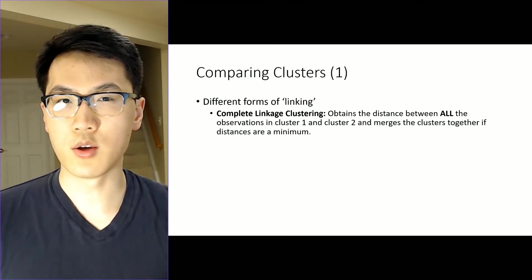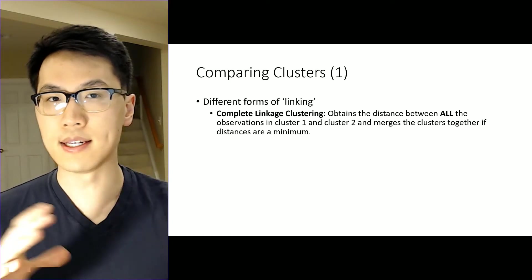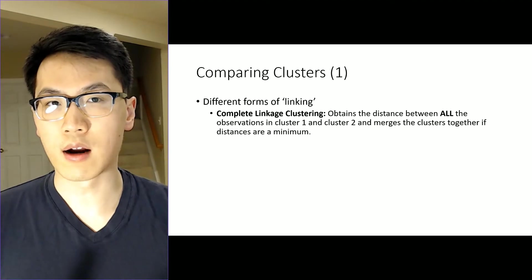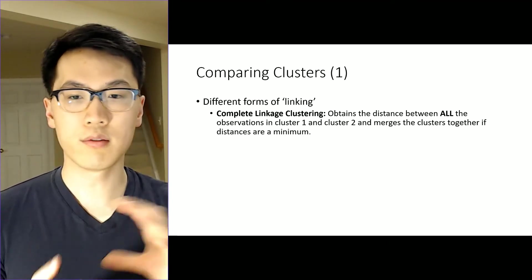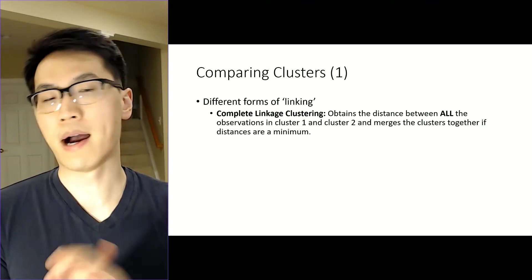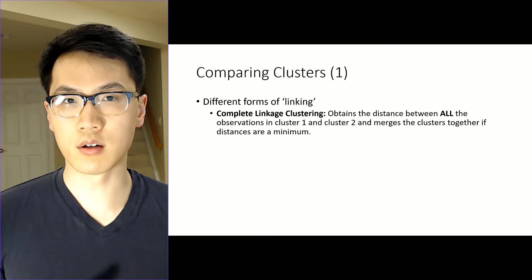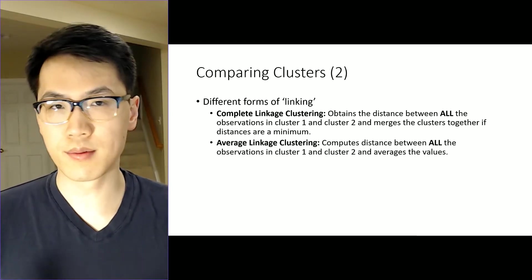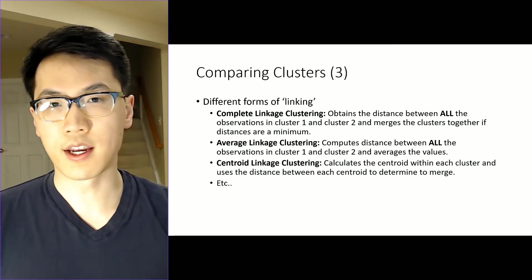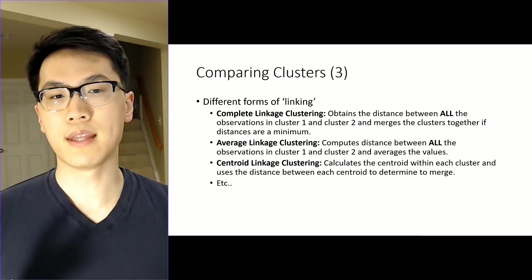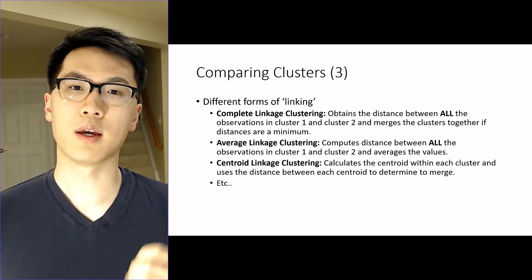One thing that's unique about this particular method is its linking. There are many different types of linkages on how to combine different clusters together. One of these is the complete linkage of clustering — it essentially obtains all the distances between all of the observations of cluster 1 and cluster 2, and combines them together if they are close. There's also average linkage clustering, centroid, and others. They all essentially do the same thing, but the way they derive the centroids and calculate which distances to compute differs.